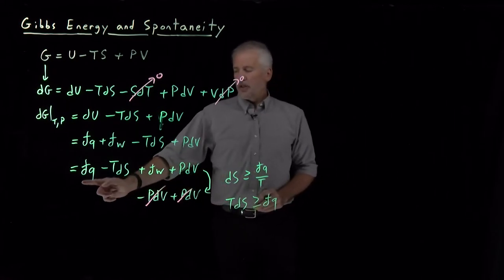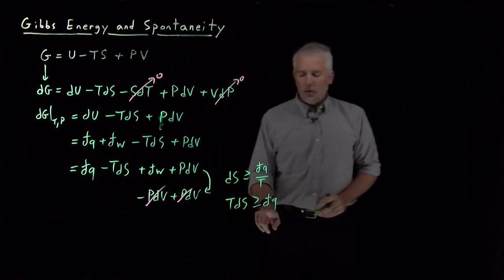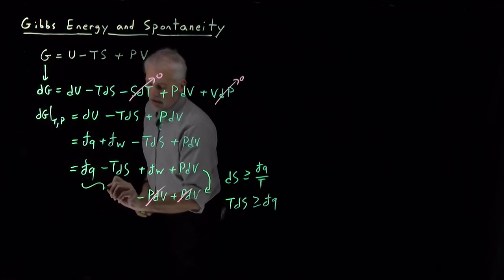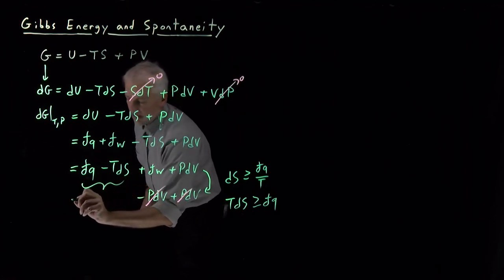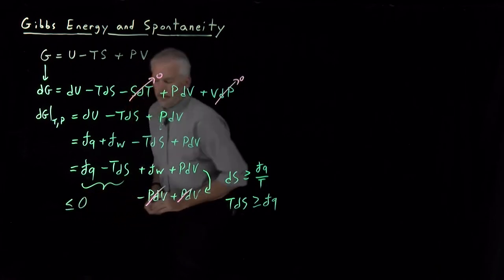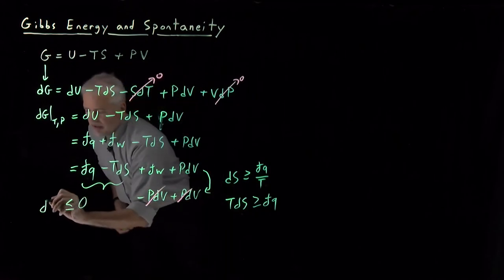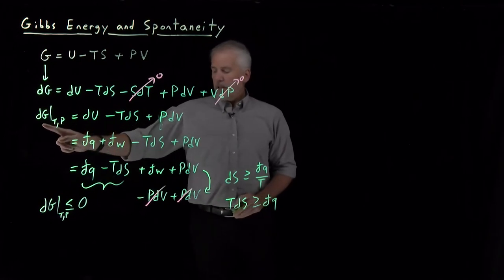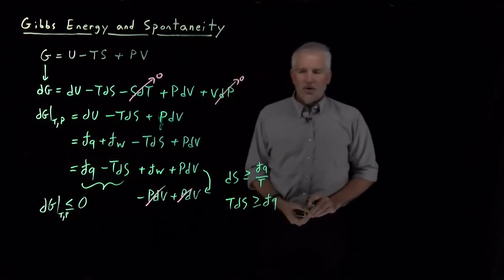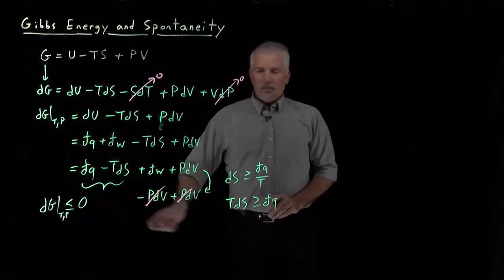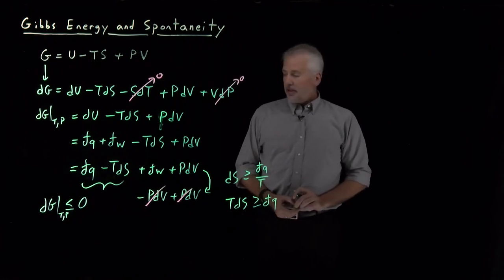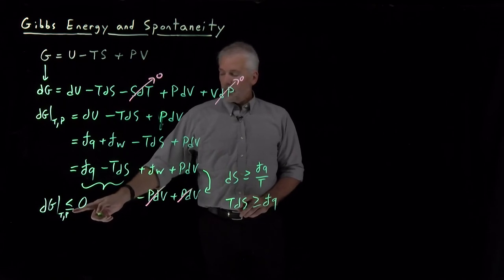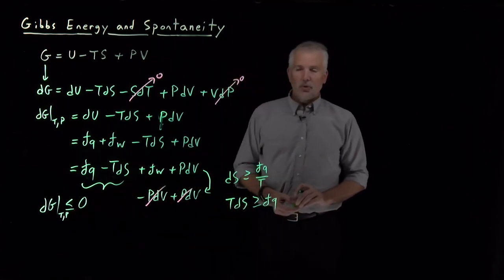In this expression, if I have dq - TdS, that's dq minus a term larger than dq, so this will be negative. What we've determined is that the change in Gibbs free energy at constant temperature and pressure will always be less than or equal to zero. If it's an irreversible or spontaneous process, that change will be negative. If it's a reversible process, the change will be zero.